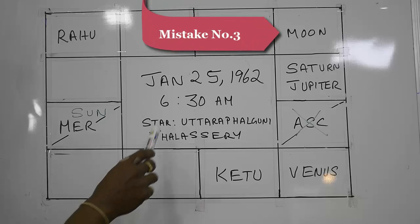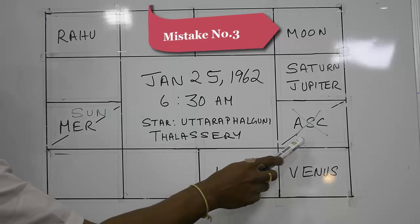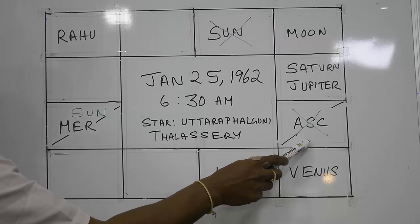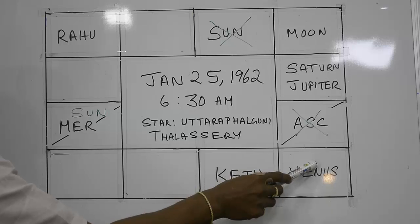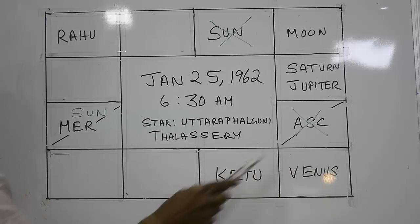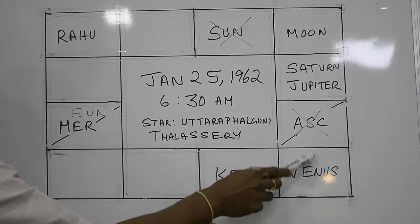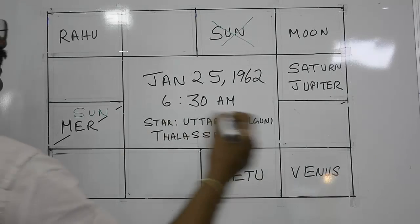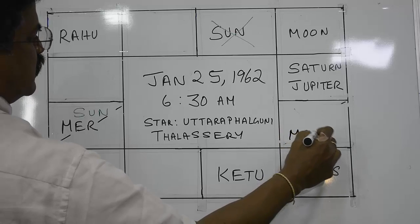Mistake number three: the star is Uttara Phalguni, and Uttara Phalguni has one part in Simha (Leo) and three parts in Kanya (Virgo). So you can only have the moon in one of those two signs, and in this case the moon is actually here in Virgo.